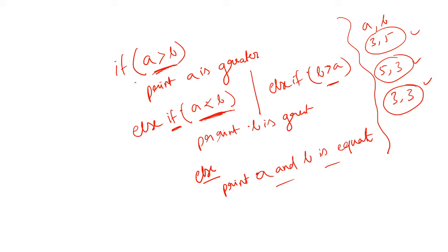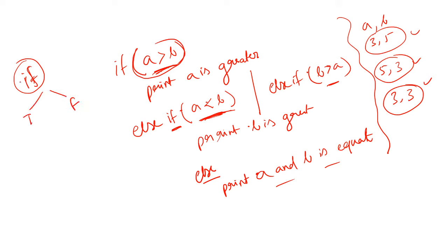Now, what are branches? Branches occur when there is an if-else condition — you are dividing the flow. You are checking a condition: if it is true there is a true part, if it is false there is a false part. So for every if condition there are two branches — one true and one false. Branch coverage means we have to cover all branches in our test cases. From these three test cases we are covering all branches.